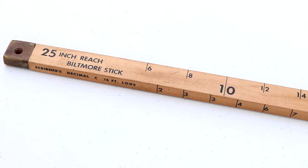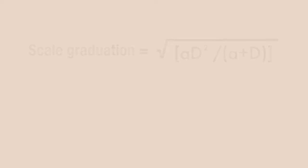You will notice on manufactured Biltmore sticks there are usually graduations of 2 inches used to estimate tree diameter. You can calculate diameter graduations for your personalized Biltmore stick using the following formula.